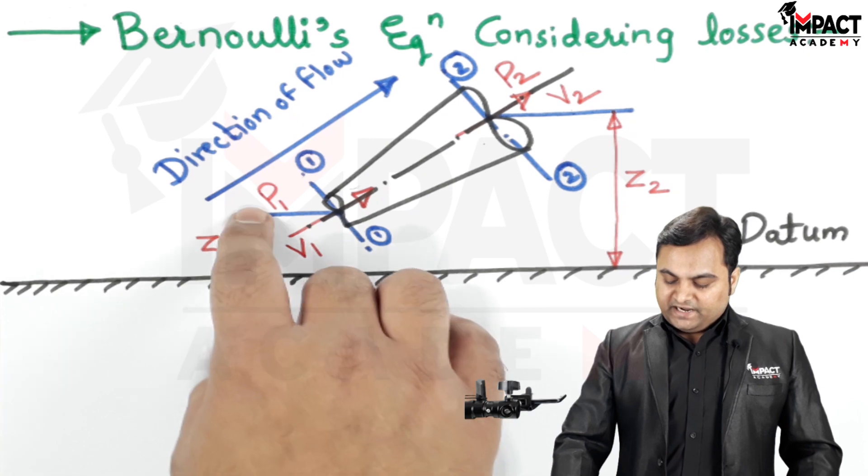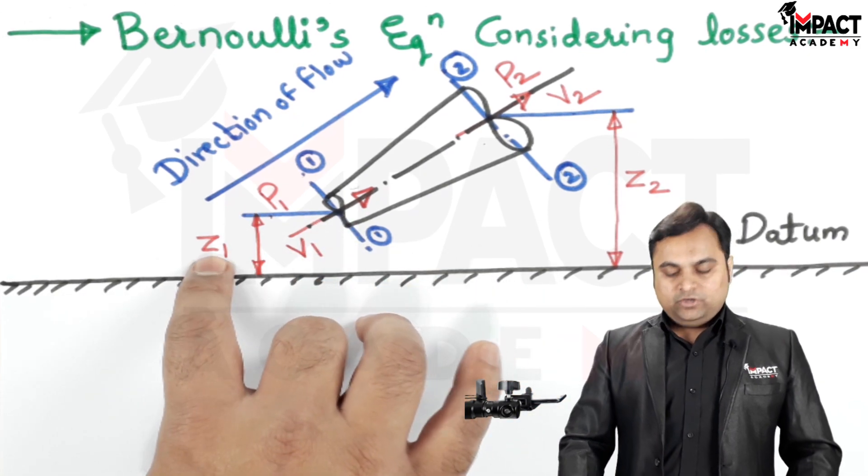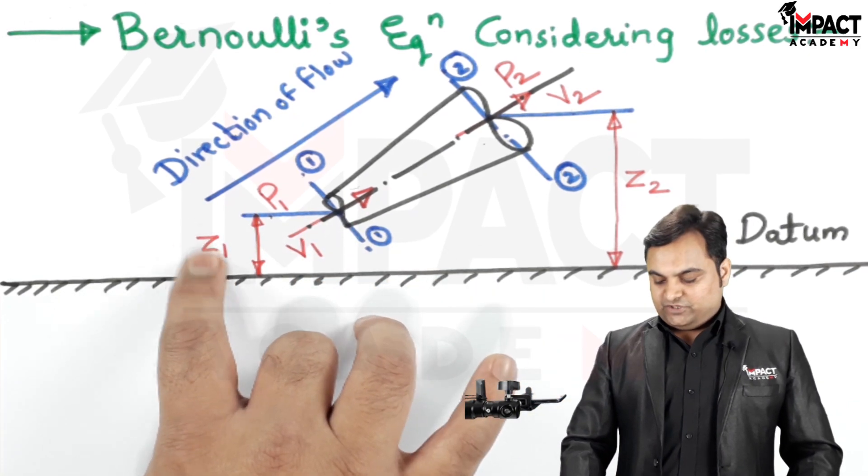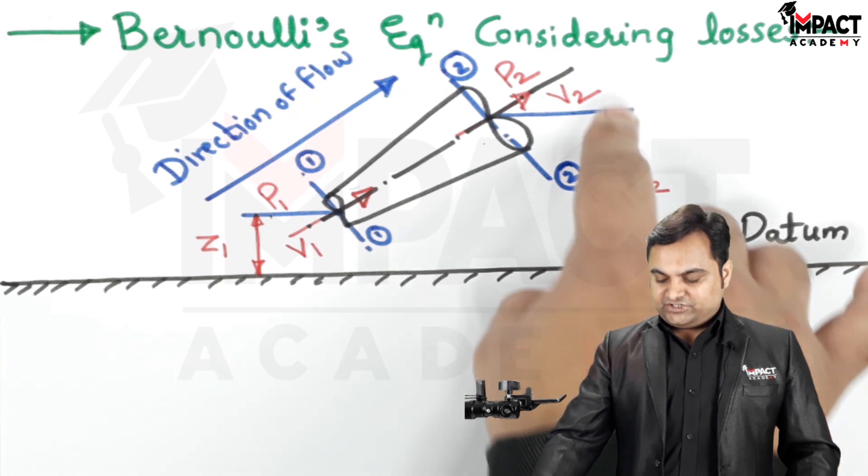There are two sections of this pipe, section 1 and section 2. There is a fixed datum or reference from there we are measuring the height up to section 1, that is z1, called as the potential head at section 1. Similarly, z2 is the potential head at section 2.